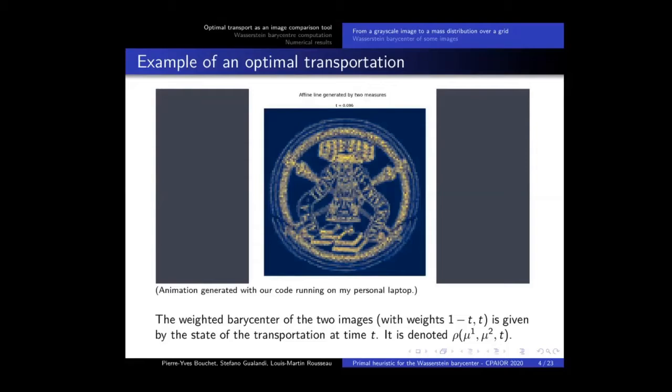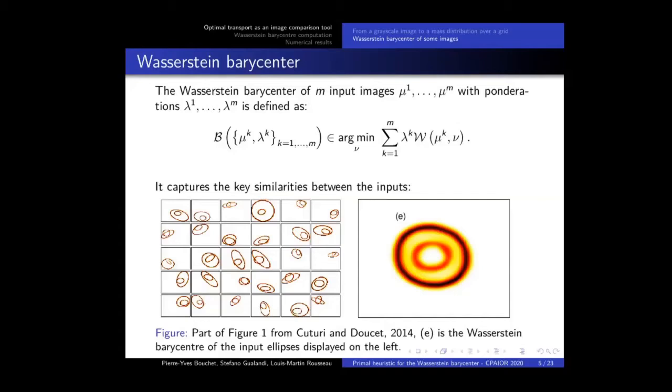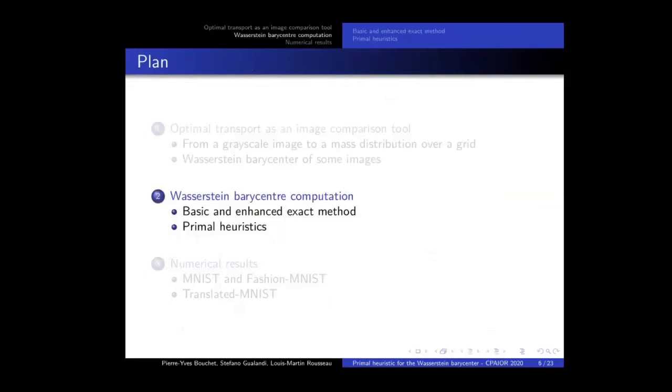But in general, you can define the Wasserstein barycentre of an arbitrary number of inputs, say n. It is defined as a new image nu, which minimizes the overall distance to all the inputs. And this is very interesting because it has some cool properties, as you see on these examples. Assume that we have some inputs, which are all fuzzy or noisy images of the same object. Their Wasserstein barycentre will capture the key similarities between the images, so if I say differently, it will give a sharp image representing what all the inputs are supposed to represent, without the noise. So this is a very interesting theoretical object, and this talk aims to compute an efficient way, to find an efficient way to compute it.